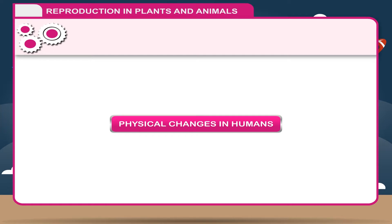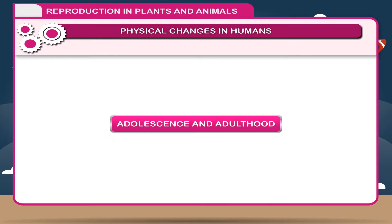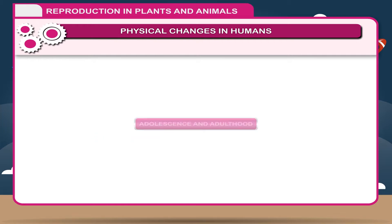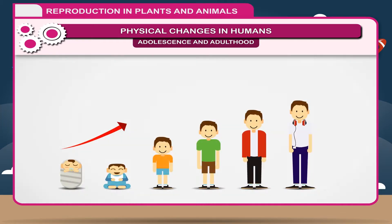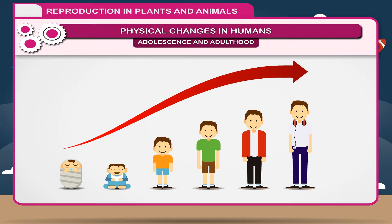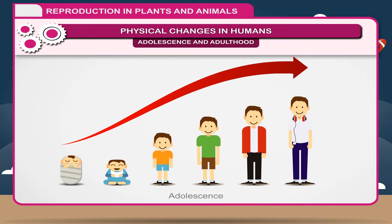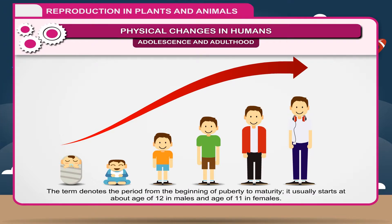Physical Changes in Humans — Adolescence and Adulthood: Everyone knows that a baby is born from the mother. Gradually, it grows, develops and matures. Adolescence is the state of maturation between childhood and adulthood. The term denotes the period from the beginning of puberty to maturity. It usually starts at about age 12 in males and age 11 in females.